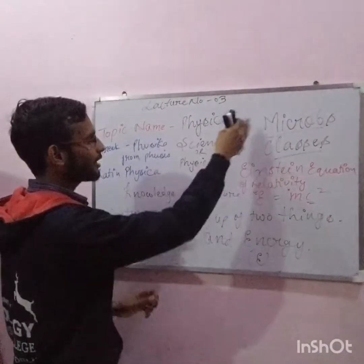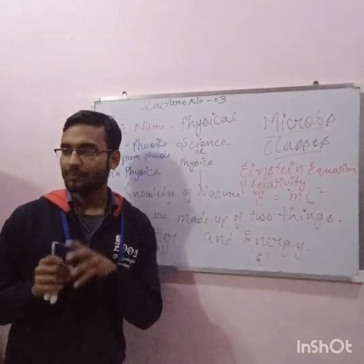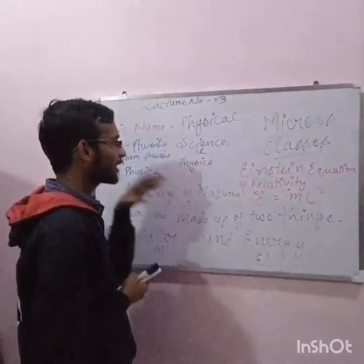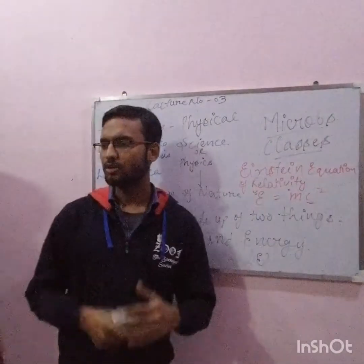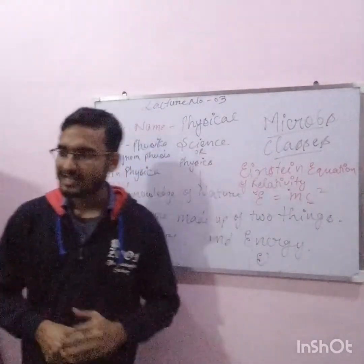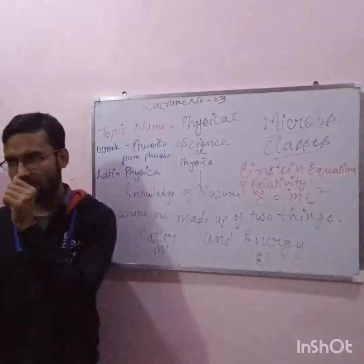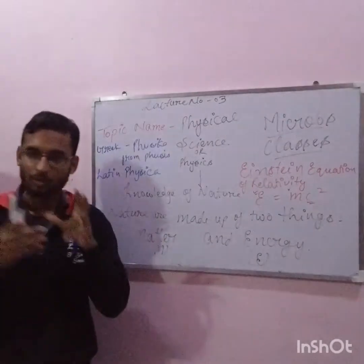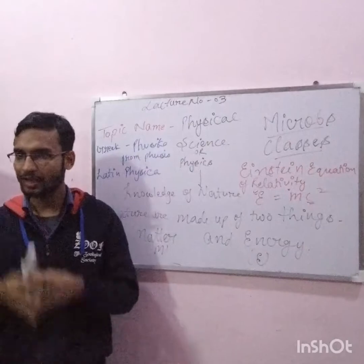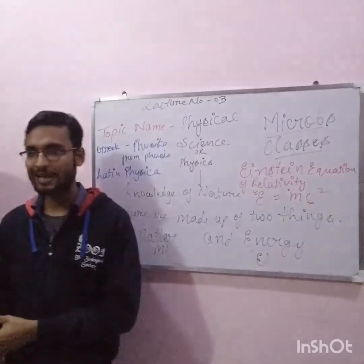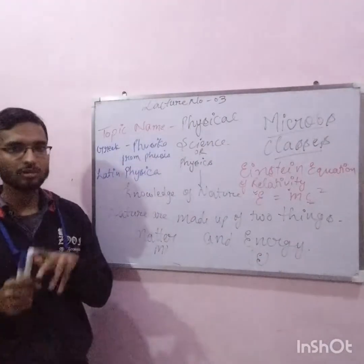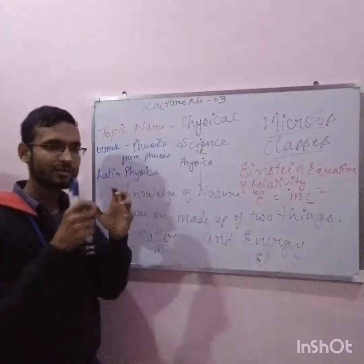We have two types of science. One was formal science and the other was empirical science. Formal science deals with logic. Empirical science includes social science and physical science. So we had physical science.